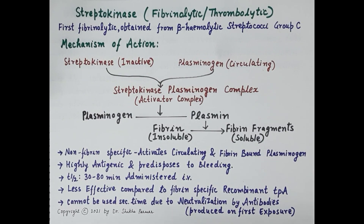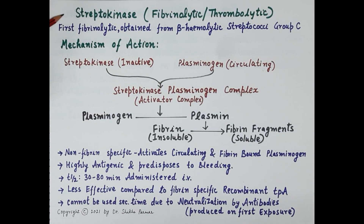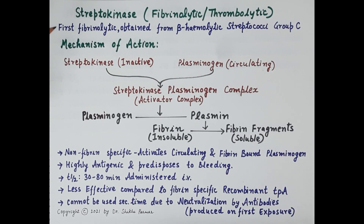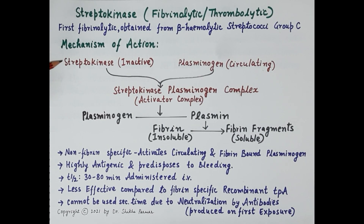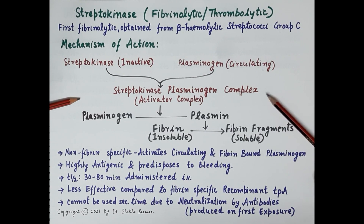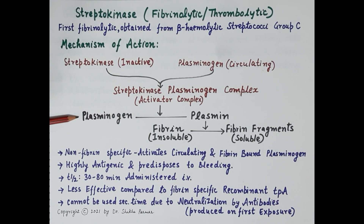The first class of fibrinolytics consists of streptokinase, the first fibrinolytic used clinically. It is obtained from non-pathogenic beta-hemolytic streptococci bacteria, group C. Regarding its mechanism of action: streptokinase is inactive as such. It combines with plasminogen circulating in the plasma to form an active streptokinase-plasminogen complex, which acts as an activator complex. This activator complex then produces proteolysis of inactive plasminogen to produce active plasmin.